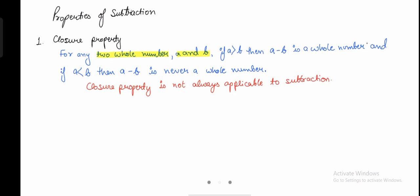There is a scenario where A is greater than B. We have taken two whole numbers — they could be any two whole numbers, let's say 2 and 3. In this case the greater number is 3 and the smaller is 2. So if A is greater than B, then A minus B is a whole number.